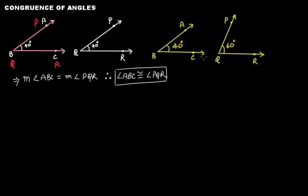Now in the next figure, here is another pair of angles. In this pair, angle ABC is 40 degrees but angle PQR is actually 60 degrees. Therefore in this case, the measure of angle ABC is not equal to the measure of angle PQR, and therefore angle ABC and angle PQR are not congruent.